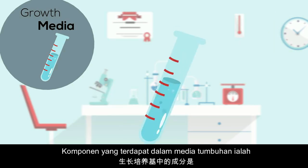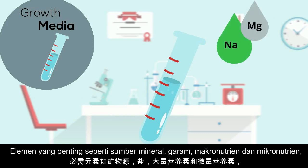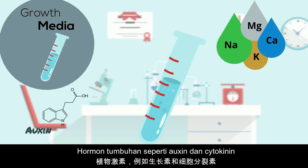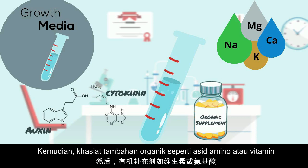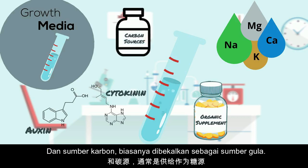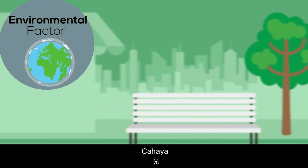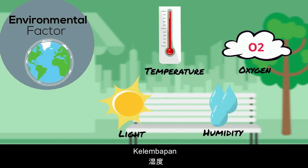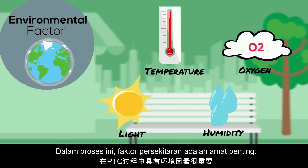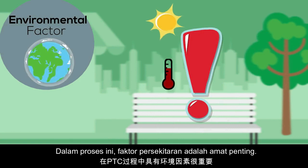The composition inside growth media includes essential elements like mineral source salts, macronutrients and micronutrients, plant hormones such as auxin and cytokinin, organic supplements like vitamins or amino acids, and carbon sources usually supplied as sugar. Environmental factors such as light, temperature, humidity, and oxygen are also important in the PTC process.